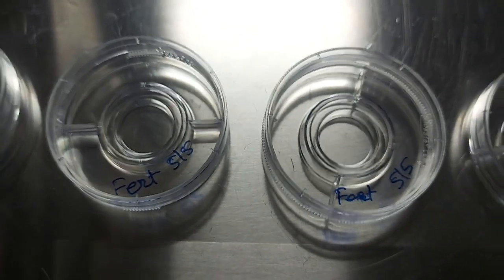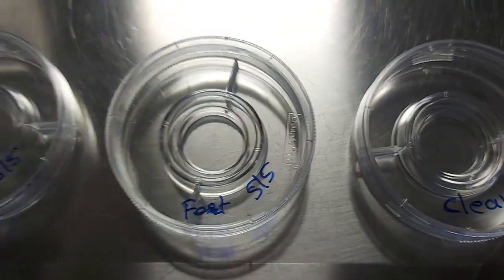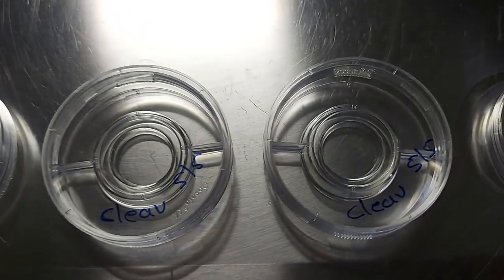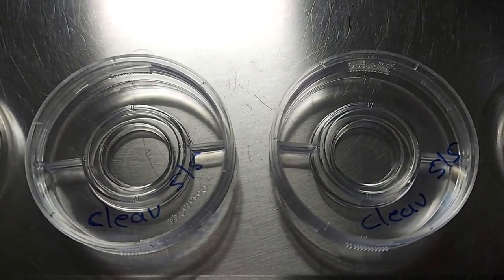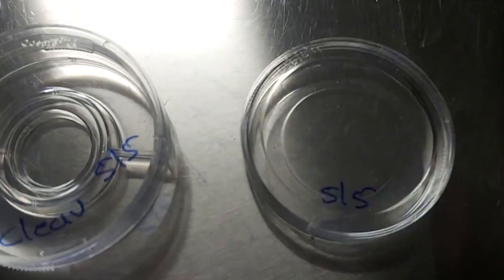And then after denudation, we will keep it in the second fourth plate. And after ICSI, we will keep all the ICSI done oocytes in this cleave plates. ICSI will be done in this plate.